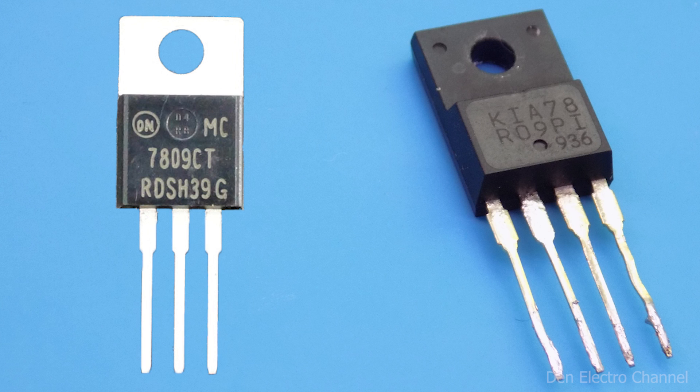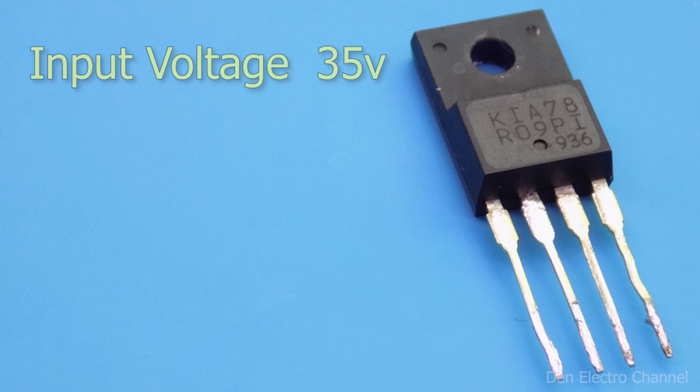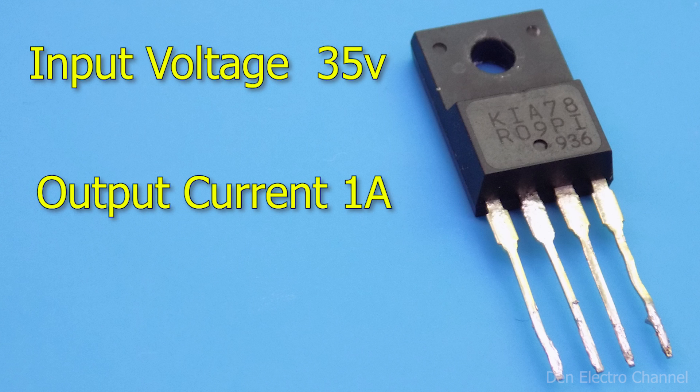The fourth pin is responsible for turning the microcircuit on and off. Up to 35 volts can be supplied to the input of the microcircuit, and the maximum operating current is 1 ampere.